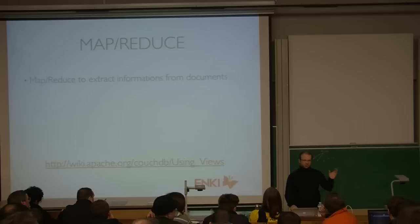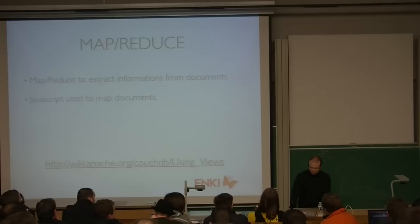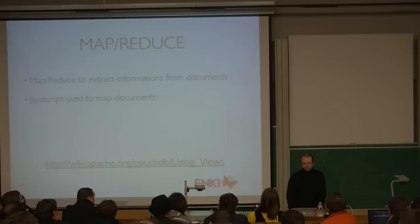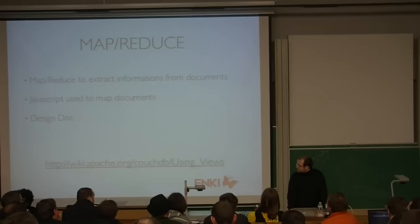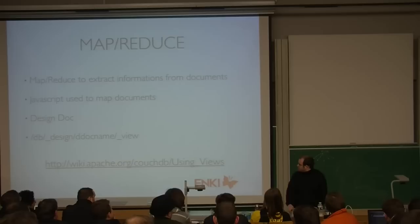MapReduce works like this: you have your documents stored in your database. You do what we call a map, which produces a list of key-value pairs from your documents. Then reduce takes that key-value list and reduces it into a single list of values. JavaScript is used internally to map and reduce documents. Each MapReduce function is stored in a special document called a design doc — each design doc ID starts with '_design'.